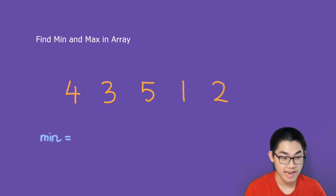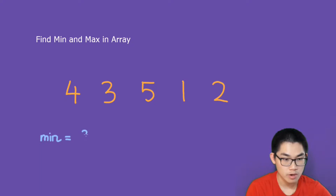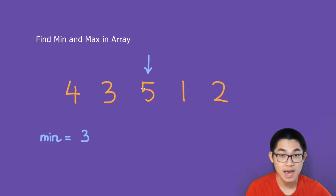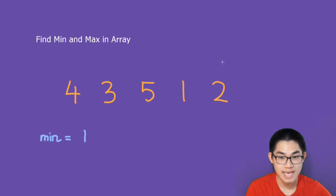I'm going to show you how to find the minimum number. The first thing I'm going to do is take number four and put it here — we're going to pretend that four is the minimum number. Now we start at the second element of the array. Is three smaller than four? Yes, it is. So we replace four with three and then we move on to number five. Is number five smaller than number three? No, it is not. So we move on to the next number. Is number one smaller than three? Yes, it is. So we replace three with number one and then finally we move to the last number. Is number two smaller than number one? No, it is not. And since we are at the end of the array, we now know that the minimum number is number one.